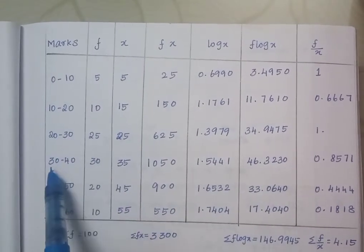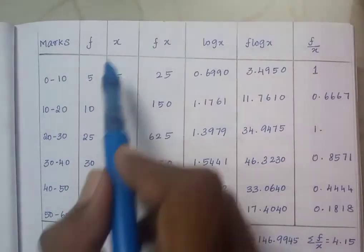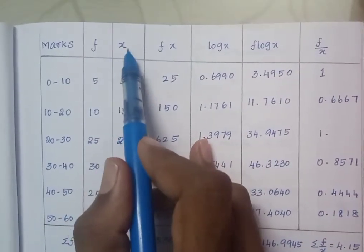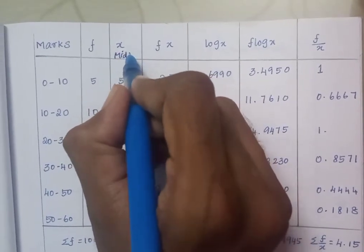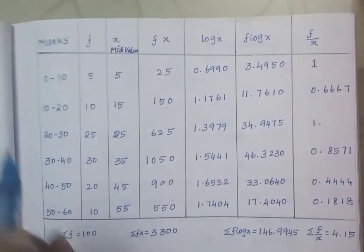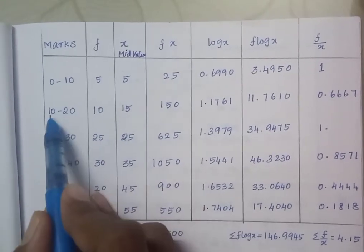Marks 0 to 10, 10 to 20, 20 to 30, 30 to 40, 40 to 50, 50 to 60, and frequency values are given. We want to find the x value. How do you find the x value? X value means mid-value or middle value. For this interval, the middle value is 0 plus 10 equals 10, divided by 2 equals 5.